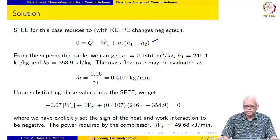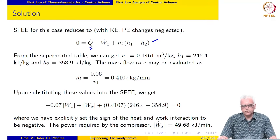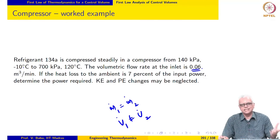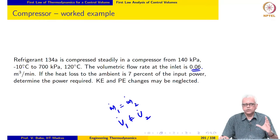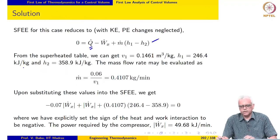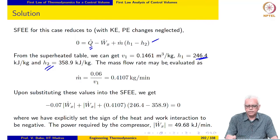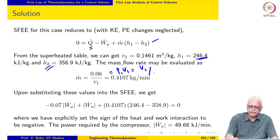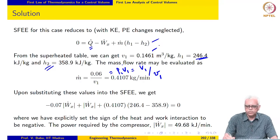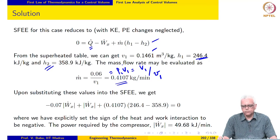We simplify the steady flow energy equation for this process with KE and PE changes neglected. Q-dot is actually given in this problem so we cannot neglect it. Since pressure and temperature are given — 140 kPa and minus 10 degrees Celsius — it is a superheated state, and we get H1 and H2 from the superheated refrigerant table at the inlet and exit. The mass flow rate m-dot equals rho1 times V1-dot, or equivalently V1-dot divided by specific volume v1. The specific volume at inlet is retrieved from the refrigerant table, giving a mass flow rate of 0.4107 kg/min.